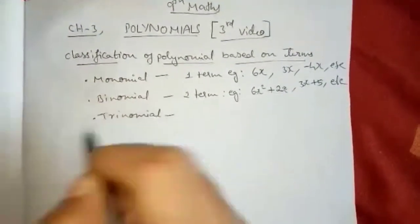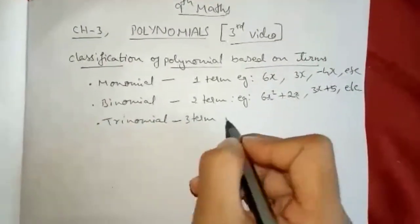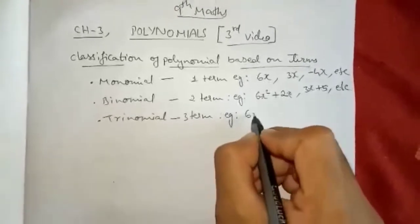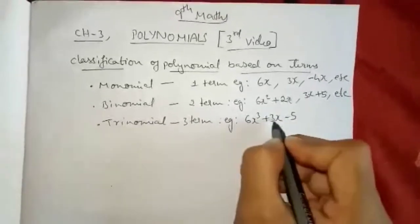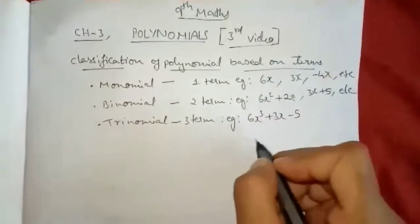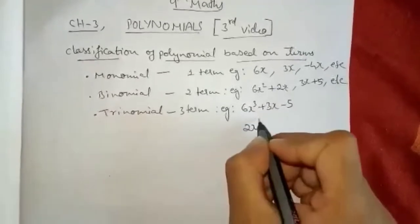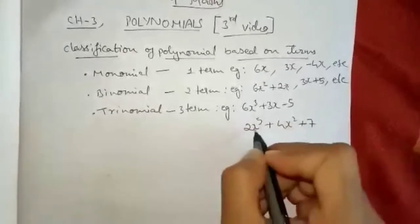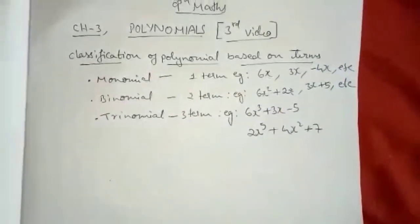What is trinomial? Trinomial means three terms will be there. For example, 6x cube plus 3x minus y. See, three terms are there, so it is trinomial. One more example — here also three terms, so it is trinomial.